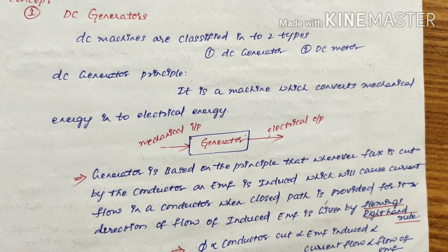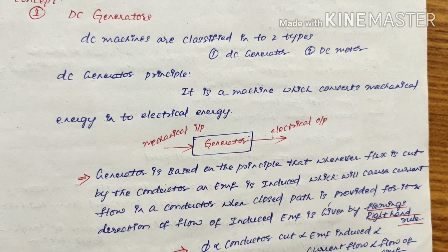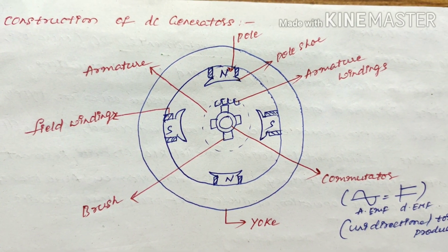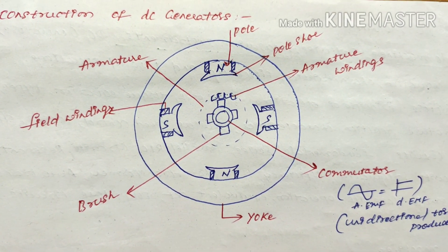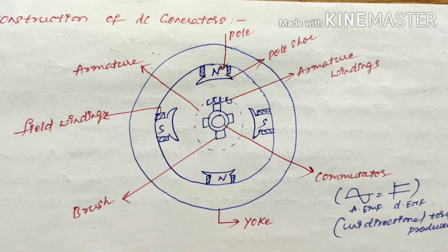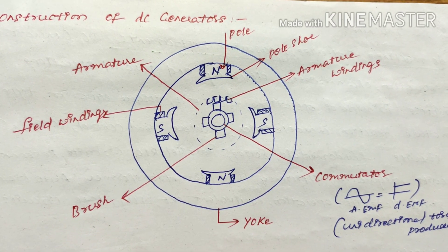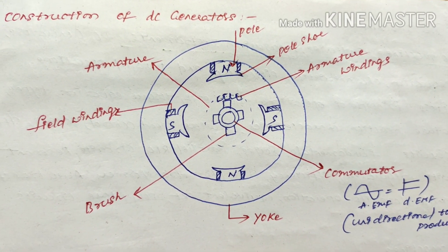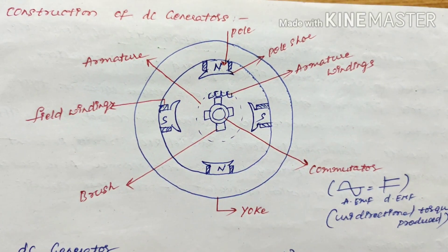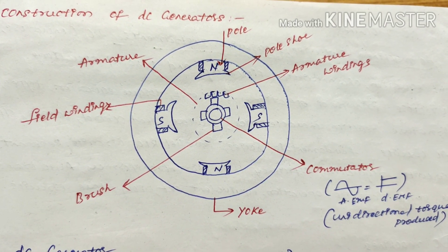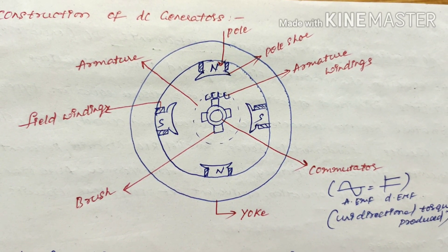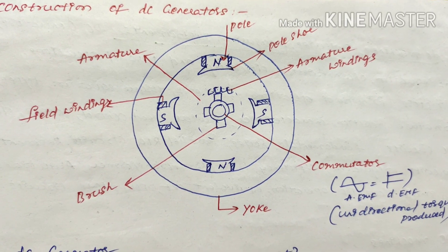Now let's look at the construction of a DC generator. It has major parts: yoke, commutator, armature winding, poles, armature, field windings, and brush. There are majorly eight components in the construction of a DC generator. The first one we'll look at is the yoke.